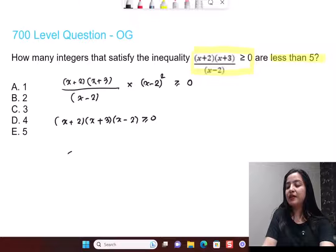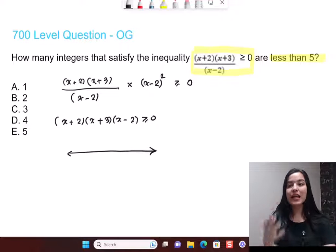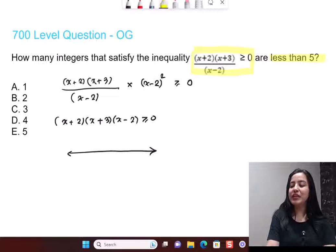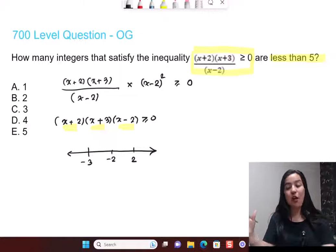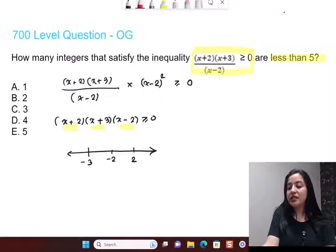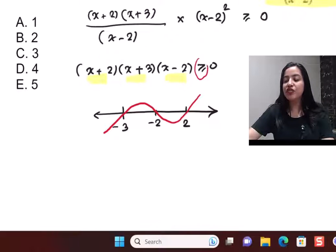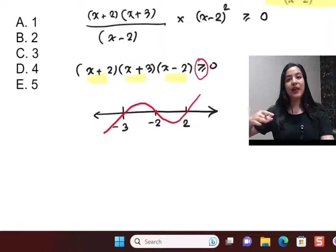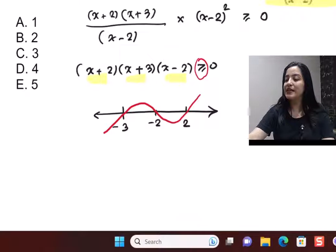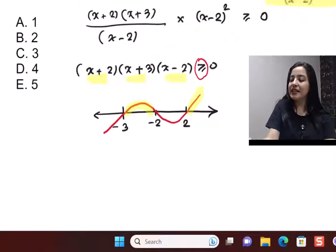So this is the simplification bit. After this, what do we do for wavy line method? We draw a number line on which we plot the breakpoints. Breakpoints we get by putting each of these factors equal to 0 one by one. So you have -3, -2, and 2. I've just put them in order. How do we then draw the wave? We start from the top right hand corner and we draw the wave. Complete detail is in the video I mentioned. So this way you can easily draw the wave.